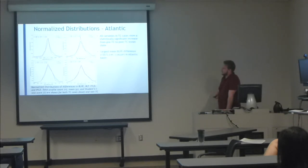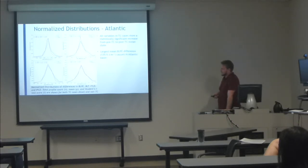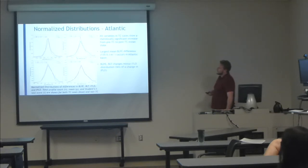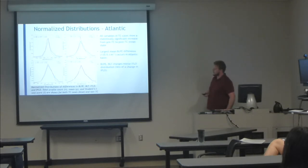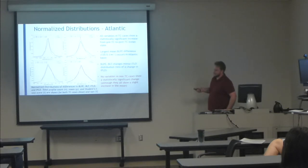The largest mean BLPE difference occurs in the Atlantic basin compared to the others — about 135 joules per meter squared, which is fairly significant given the mean is about 750 joules per meter squared. The changes in BLPE, barrier layer thickness, and isothermal layer depth distributions mirror each other. The red line represents non-TC cases for comparison, and there was no statistical significance for those cases.